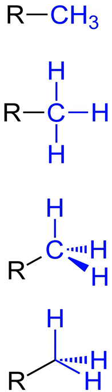A methyl group is an alkyl derived from methane, containing one carbon atom bonded to three hydrogen atoms, CH3. In formulas, the group is often abbreviated Me. Such hydrocarbon groups occur in many organic compounds.